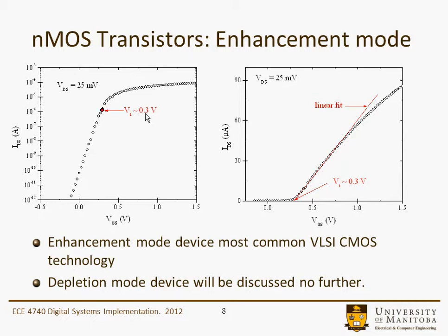You get a threshold voltage — approximately 0.3 volts — upon which the current will increase even further. So above the threshold voltage is well above, and below it is the sub-threshold region. These are sort of the operating points of the device. On a linear scale of IDS versus VGS, you'd see that above the threshold voltage, you get a linear fit between IDS and the gate voltage.